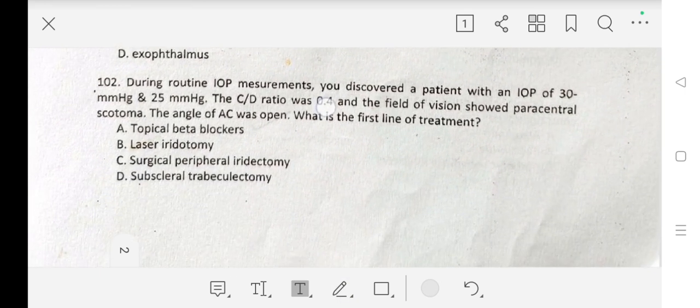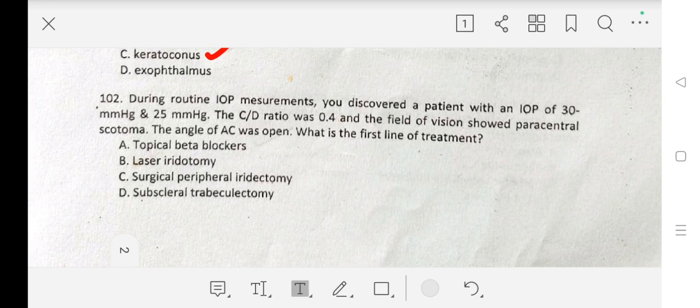Question number 102 is: During routine IOP measurement, you discovered a patient with an IOP of 30 mmHg and 25 mmHg. The CD ratio was 0.4 and the field of vision showed paracentral scotoma. The anterior angle of AC was open. What is the first line of treatment? A. topical beta blockers, B. laser iridotomy, C. surgical peripheral iridotomy, D. subscleral trabeculotomy. Our answer is A. topical beta blockers.